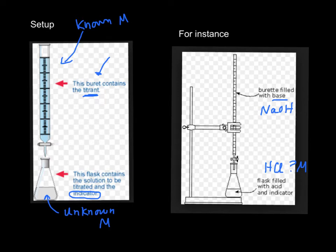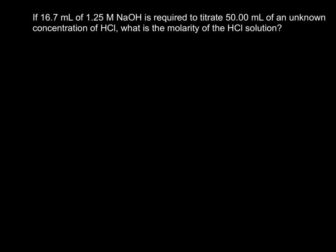Let me do an example mathematically. For instance, if it took 16.7 milliliters of 1.25 molar NaOH to titrate — that means to react with exactly 50 milliliters of an unknown concentration of HCl — what's the molarity of the HCl?